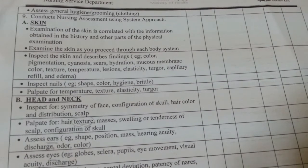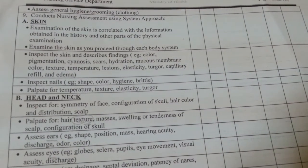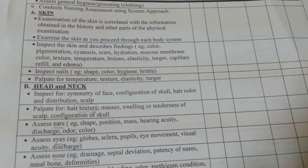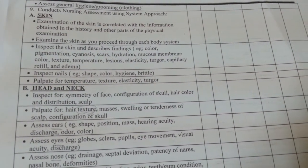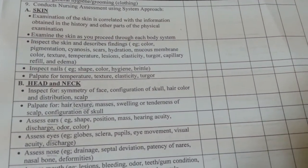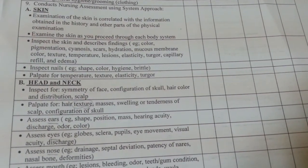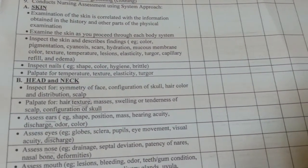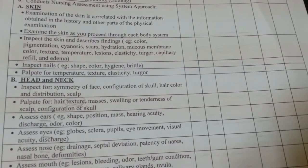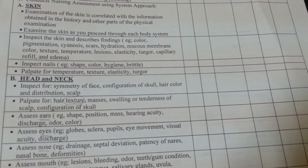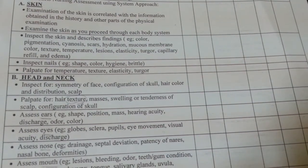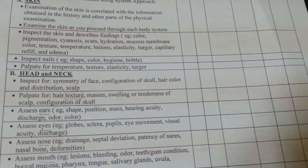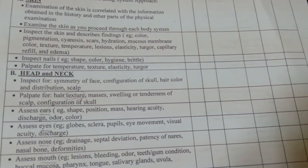Conduct nursing assessment using a systems approach. Examination of the skin is correlated with information obtained in the history and other parts of the physical examination. Examine the skin as you proceed through each body system. Inspect the skin and describe findings, which include color, pigmentation, cyanosis, scars, hydration, mucous membrane color, texture, temperature, lesions, elasticity, turgor, capillary refill, and edema.